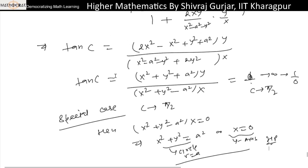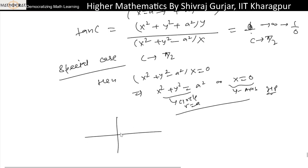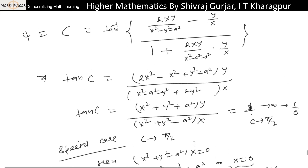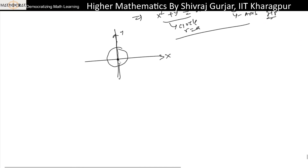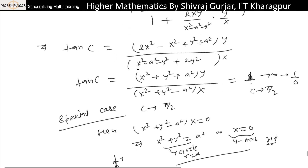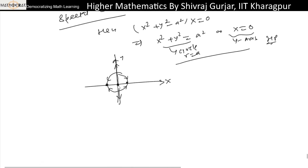We can take any value we wish for c. To draw this: this is origin (0,0), and a streamline is the circle. The x-axis (y = 0) is also a streamline, and the y-axis is also a streamline. Here is the source at (a, 0) and the sink at (-a, 0). The streamlines flow from the source to the sink. There will be many such streamlines. I hope this is clear.